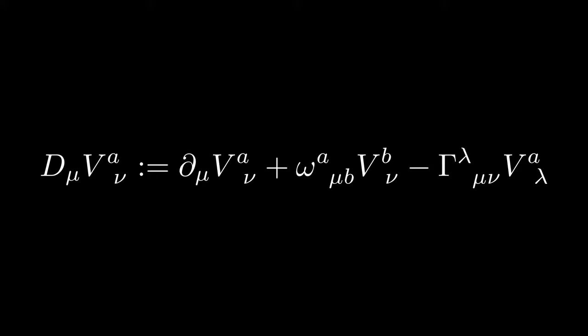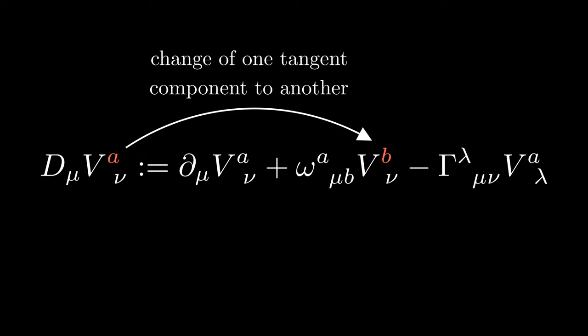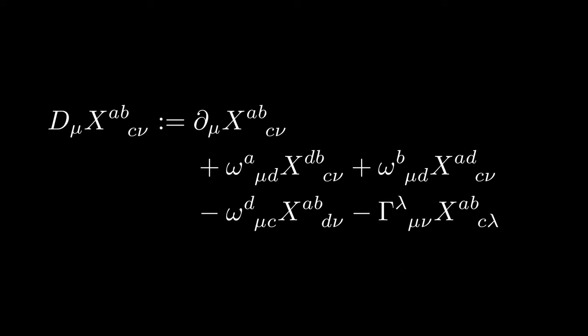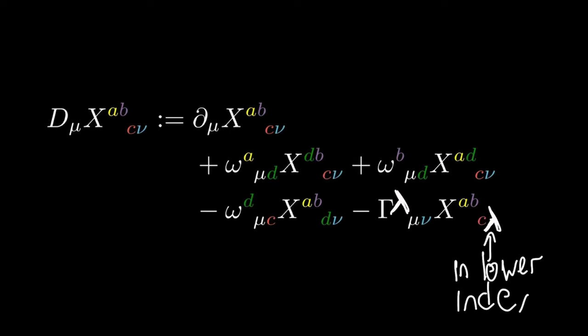Now we arrive at the covariant derivative of a mixed tensor. They are defined in a way so that the indices of the tangent space are accompanied by a spin connection, and the indices of the base manifold by a Christoffel connection. For example. And one little note, the summations over the lower or covariant indices have a minus sign.